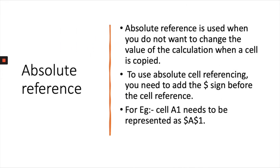The next type is absolute reference. Absolute reference is used when you do not want to change the value of a calculation when a cell is copied. To use absolute cell referencing, you need to add a dollar sign before the cell reference — for example, cell A1 is represented as $A$1.